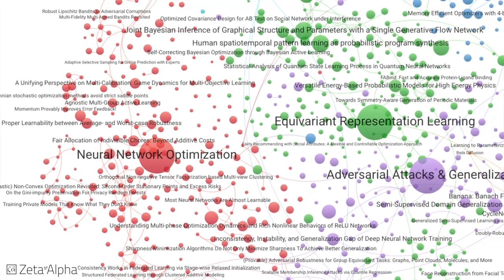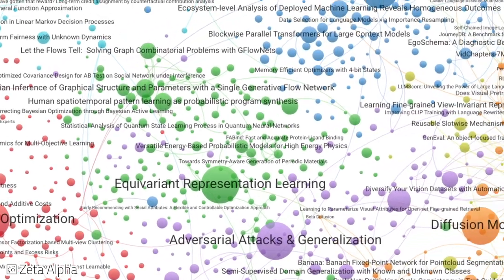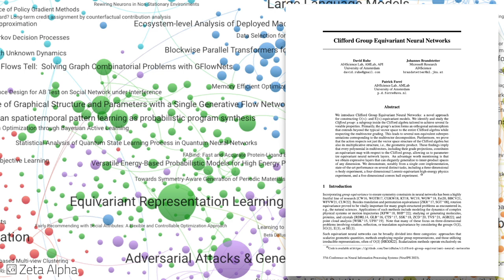Clifford Group Equivariant Networks are a novel approach for constructing ON and EN equivariant networks, allowing for expressive layers that can generalize to inner product spaces of arbitrary dimensions, with benefits in applications such as physical simulations.